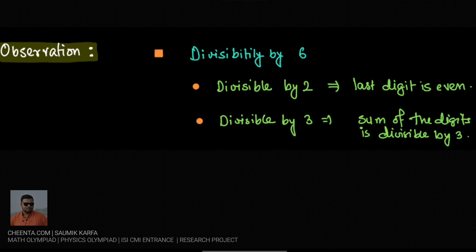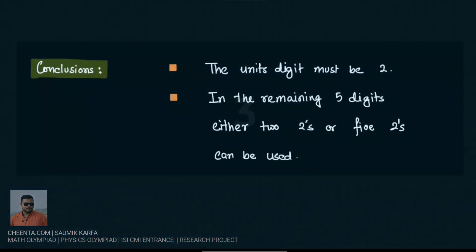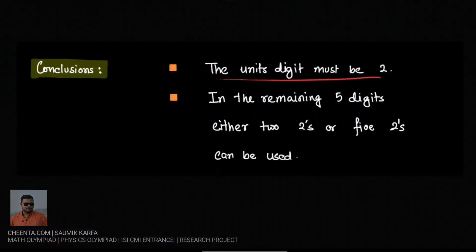From these two observations we can conclude that the unit digit of the number we are forming must be 2. Why 2? It could be anything even, but as we are only allowed to use 2, 3, or 9, 2 is the only possible even option that we have.